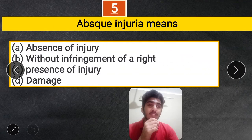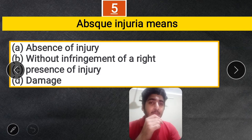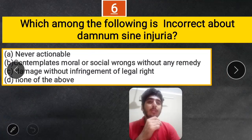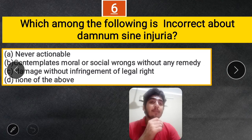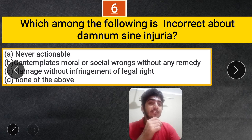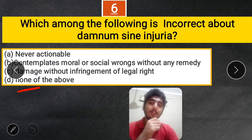Question 5: 'Absque injuria' means — A. Absence of injury, B. Without infringement of a right, C. Presence of injury or damage. The correct answer is B — without infringement of a right. Question 6: Which among the following is incorrect about 'Damnum sine injuria'? A. Never actionable, B. Contemplates moral or social wrongs without any remedy, C. Damage without infringement of a legal right, D. None of the above. The correct answer is D — None of the above, because all options are correct descriptions.